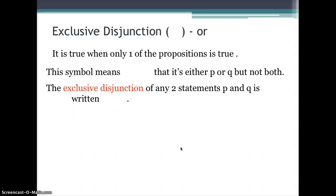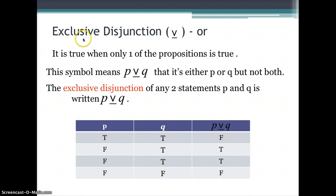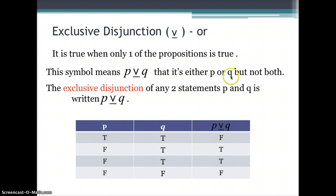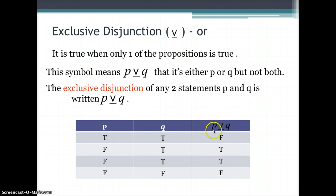The other type of 'or' is called exclusive disjunction, with the symbol being a V with a line underneath it. This is only true when exactly one of the propositions is true — P or Q but not both. Looking at the truth table: when both the first and second propositions are true, P or Q is false.